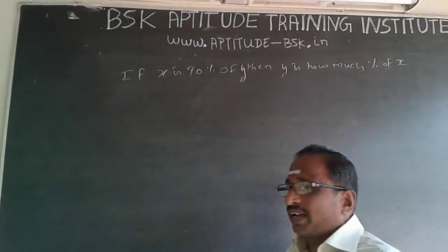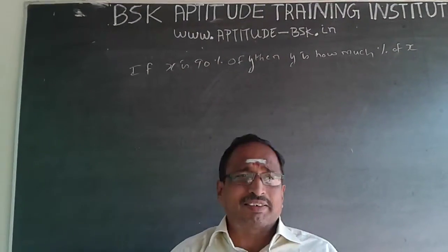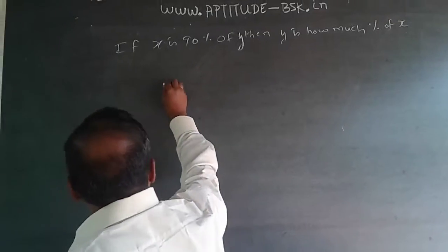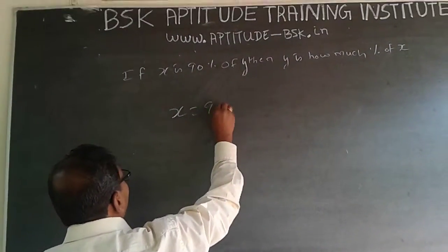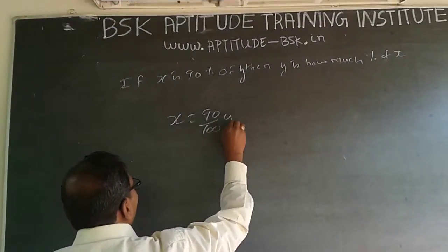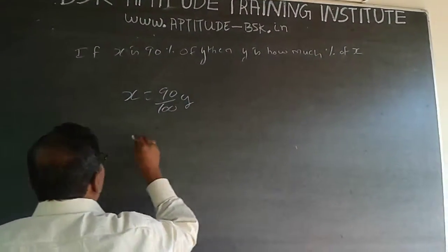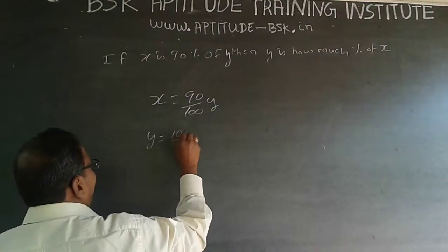This is a quantitative question on percentages. x equals 90% of y, which means x = 90/100 of y. Then they ask: y is how much percentage of x? This means y = 10/9 of x.